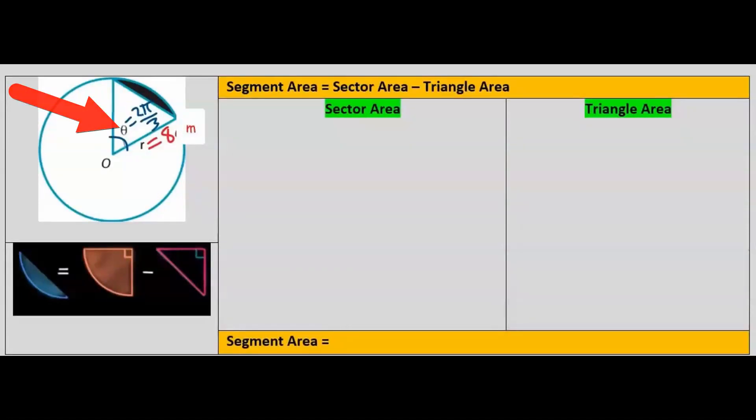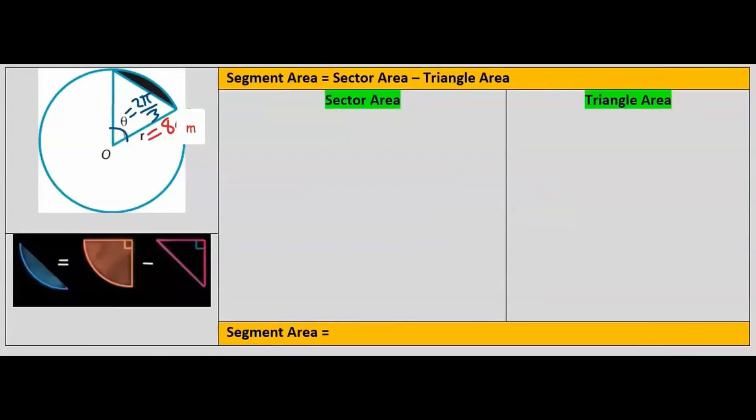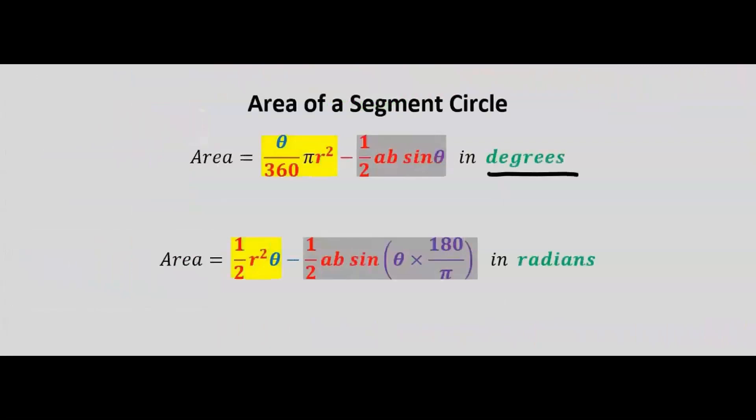How do we find the area of a segment with a given angle which is in radians? The angle is 2π divided by 3, which is in radians. The first step is to consider the given angle which is in radians. Next, choose the right formula here for radians.